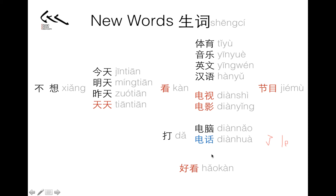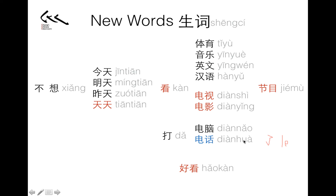The opposite would add 不 in front of it. Ugly or not worth watching: 不好看. Generally don't use this on people — it's not very polite. So: 节目好看 — this program is worth watching. 节目好看吗? — Is this program worth watching?